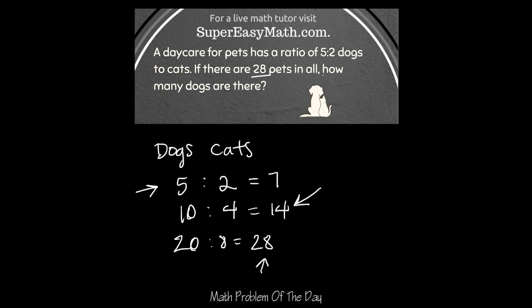Now I need to double check my question. I notice that it says how many dogs are there. Remember dogs was the first column, so the answer is 20.